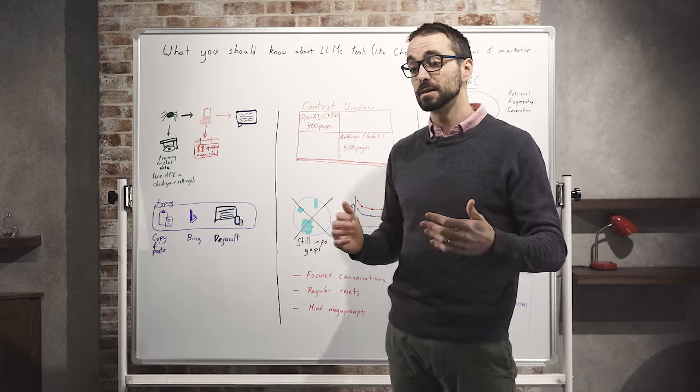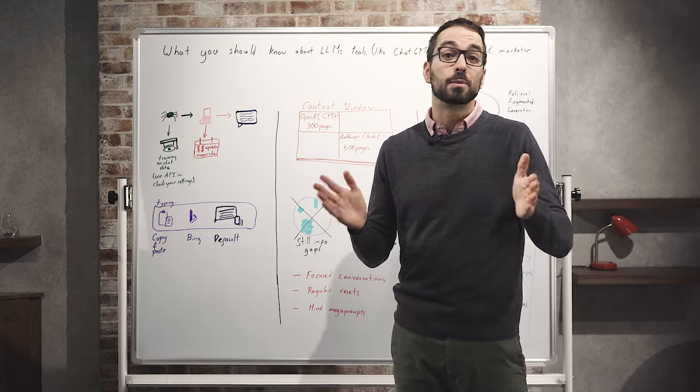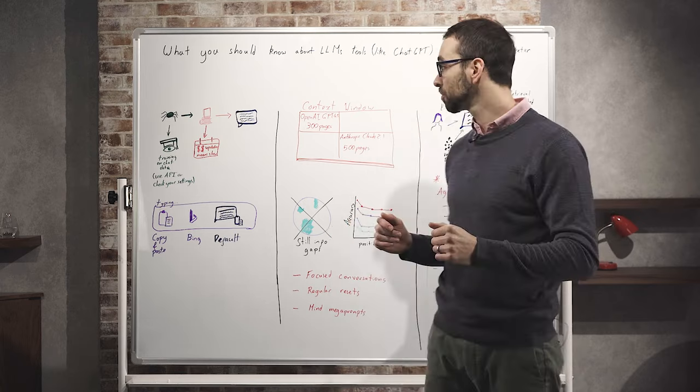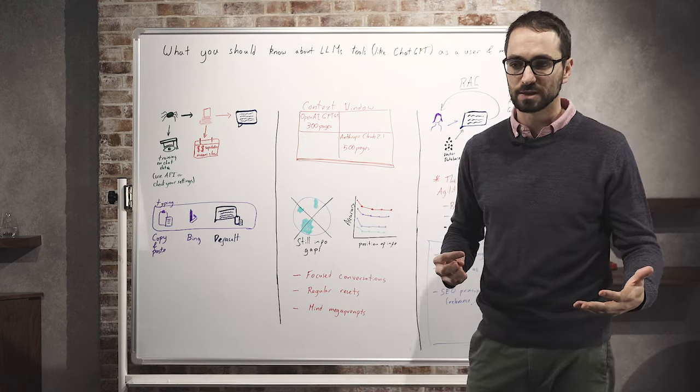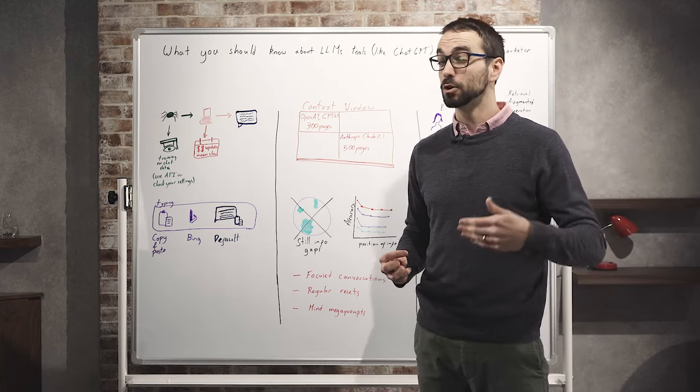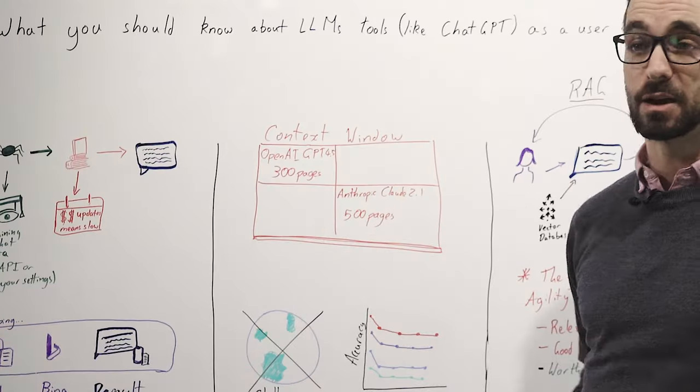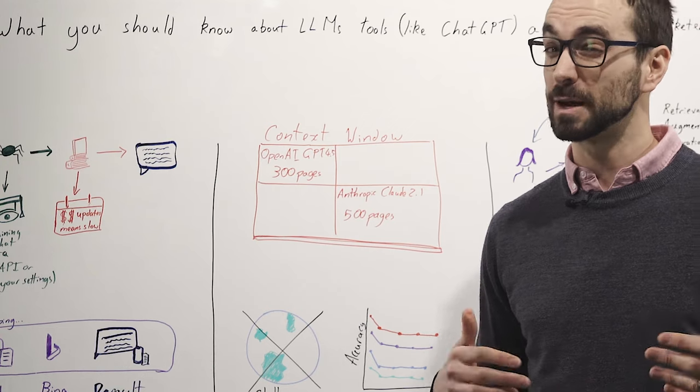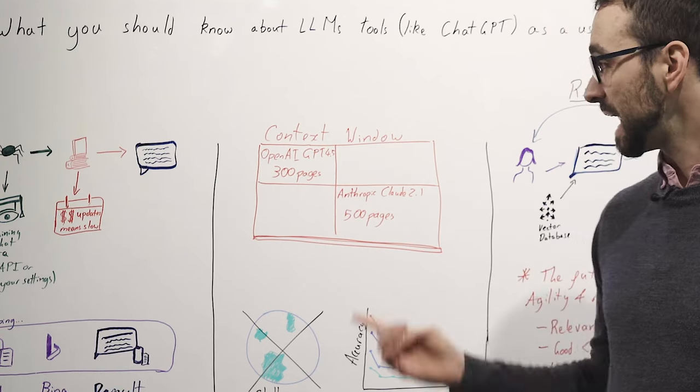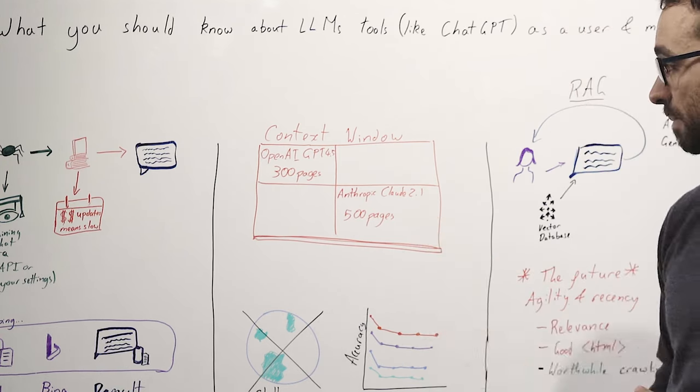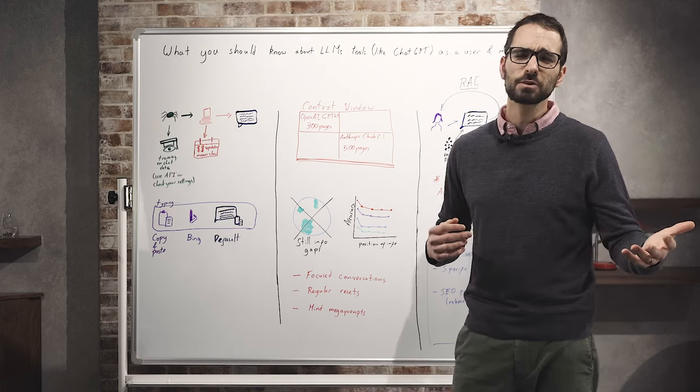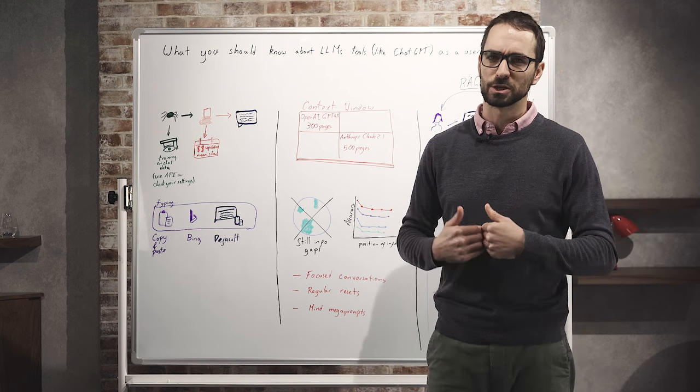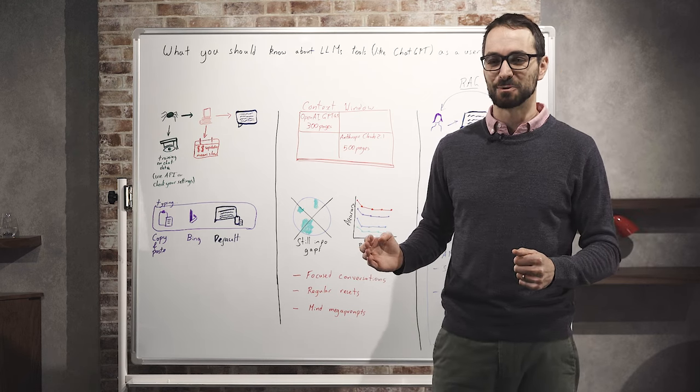So it used to be that the main limitation was just how much information you could fit in. And a lot of the conversations came down to context windows. So it used to be that you couldn't really paste that much information in there. We've reached the point where actually you can put quite a lot in, so GPT 4.5, you can paste about 300 pages worth of text. Anthropic, which is a key competitor, you can paste about 500 pages of text in there. So we've really reached a point where I don't want to be copying and pasting that much information into each prompt. That's not really the limitation anymore.